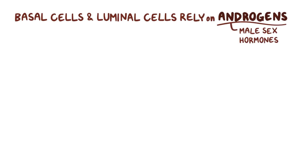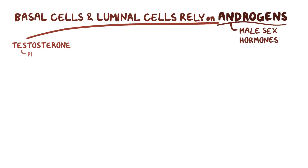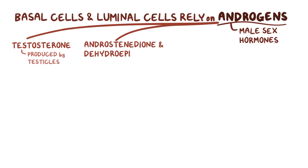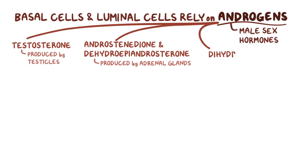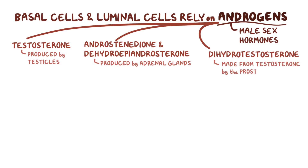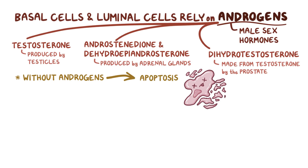The basal cells and luminal cells of the prostate rely on stimulation from androgens, or male sex hormones, for survival. The androgens include testosterone, which is produced by the testicles; androstenedione and dehydroepiandrosterone, which are produced by the adrenal glands; and dihydrotestosterone, which is made from testosterone by the prostate itself. Without these androgens, the normal prostate cells, particularly the luminal cells, cannot survive and undergo apoptosis, or programmed cell death.